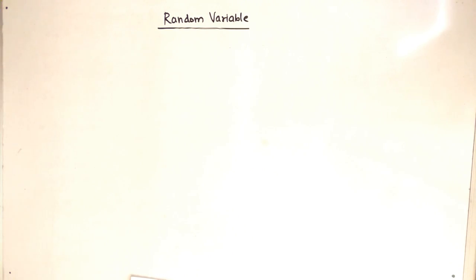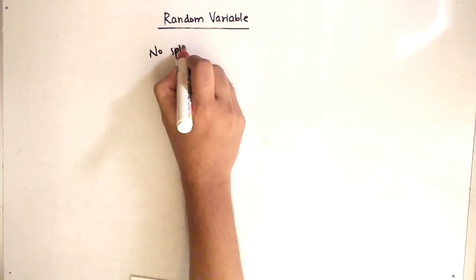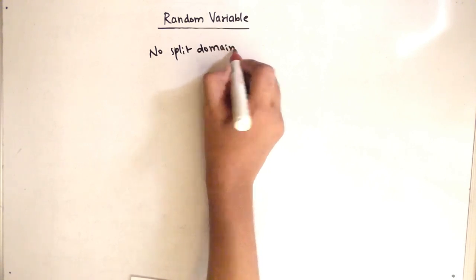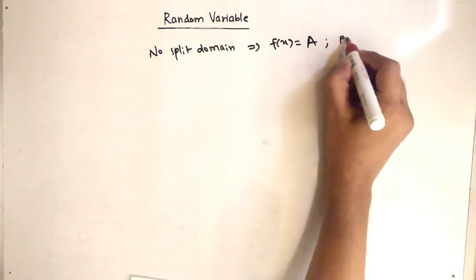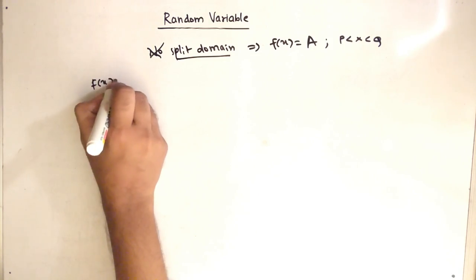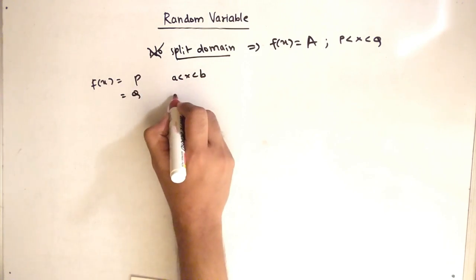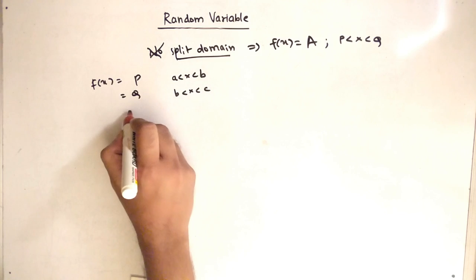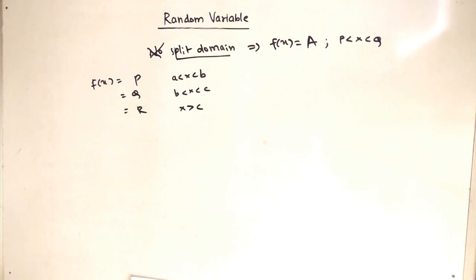In the previous video we covered sums on non-split domains, where f(x) equaled some value and x ranged from p to q — very simple to solve. Now the question is: what happens with a split domain? f(x) is some value p when x is in range a to b, some value q when x is in range b to c, and value r when x is greater than c. Let's see how to solve these.